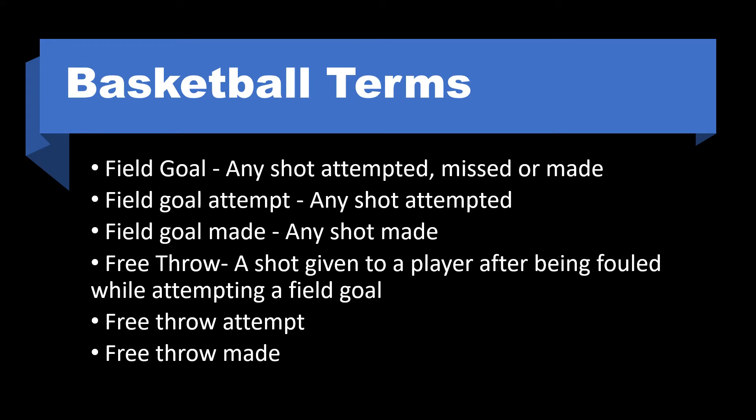Basketball terms: a field goal is any shot attempted, missed, or made. A field goal attempt is any shot attempted. A field goal made is any shot made. A free throw is a shot given to a player after being fouled while attempting a field goal. Free throw attempt and free throw made refer to attempts and successful free throws respectively.